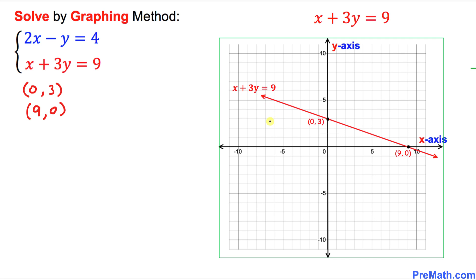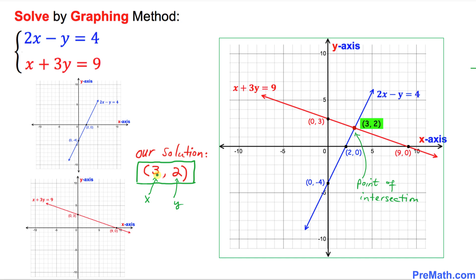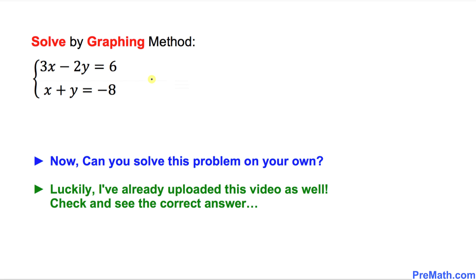Here is our final product. On the left you see the two individual graphs — blue and red — and now I have superimposed them together. Where you see the point (3, 2), that is the point of intersection of these two lines, and that is our solution. So the solution turns out to be (3, 2), where 3 is our x-value and 2 is our y-value.